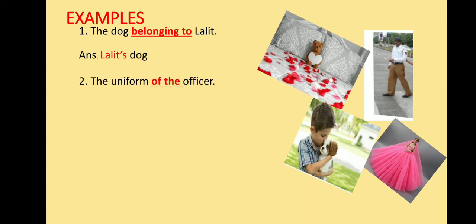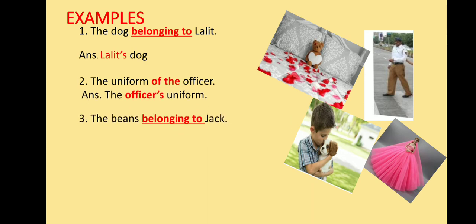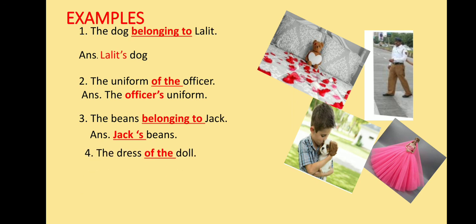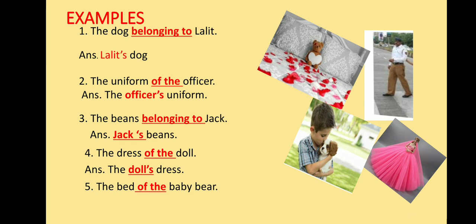Next example: 'The uniform of the officer.' Here also, the sentence shows ownership. Who is the owner of the uniform? The officer. So, we can write 'the officer's uniform.' Next: 'The beans belonging to Jock' — the owner of the beans is Jock, so we write 'Jock's beans.' Next: 'The dress of the doll' — the owner of the dress is the doll, so we write 'the doll's dress.' Next: 'The bed of the baby bear' — the owner of the bed is the baby bear, so we write 'the baby bear's bed.'